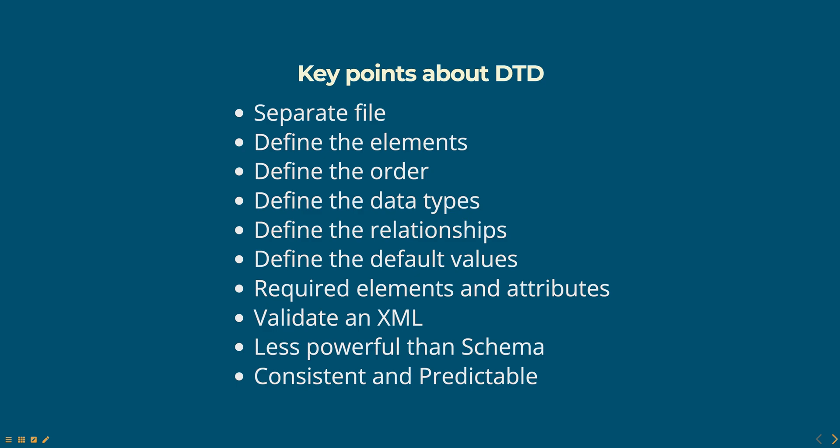DTDs can also be used to define the order in which elements can appear in an XML document, and the number of times an element can appear. DTDs can be used to define the data types of elements and attributes, such as whether an element should contain text or a number.